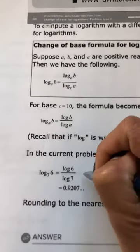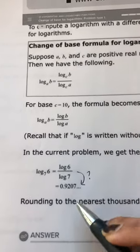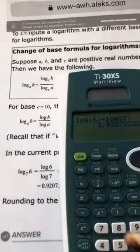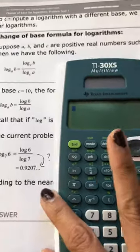And the question is how do you input this into your calculator so that you get 0.9207? So the answer is this. Showing you how to use the calculator.